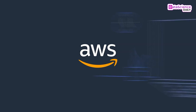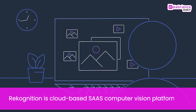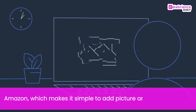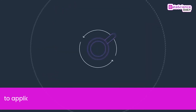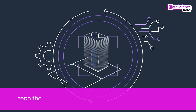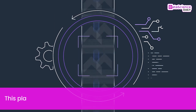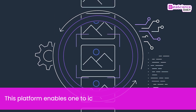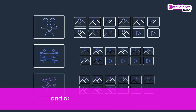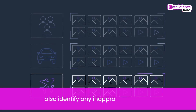Amazon Rekognition is a cloud-based SaaS computer vision platform by Amazon which makes it simple to add picture and video analysis to applications, utilizing proven and highly scalable deep learning technology that needs no machine learning knowledge to use. This platform enables one to identify people, objects, scenes, text, and activities in pictures and videos, and also identify any inappropriate content.